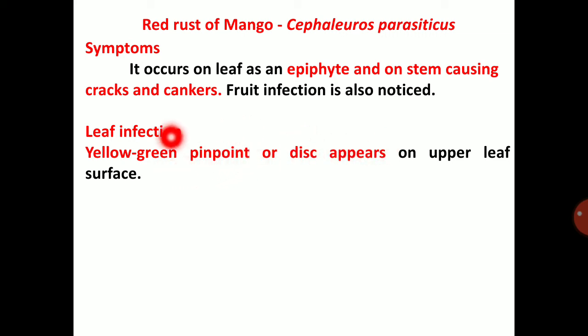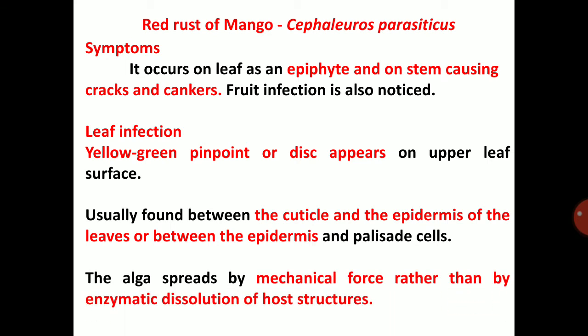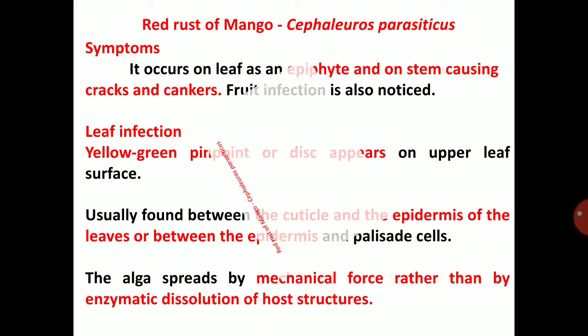The yellow-green pinpoint spots are usually found between the cuticle and epidermis of the leaves, or between the epidermis and palisade cells. The algae spread by mechanical force rather than by enzymatic dissolution of host structures.